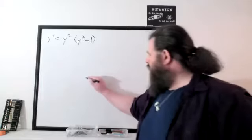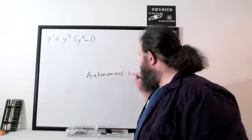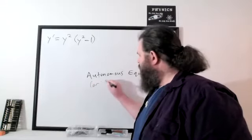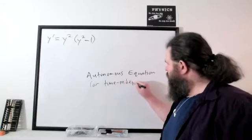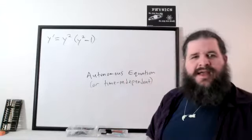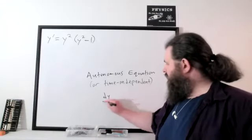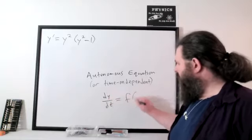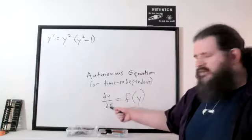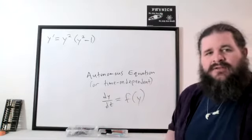This is an example of what we call an autonomous equation, sometimes called time-independent. In general, it just means that the differential equation can be written as dy/dt equals some function of just y. In other words, the rate of change of the function depends only on what the function's value is right now — it doesn't depend on what time it is.